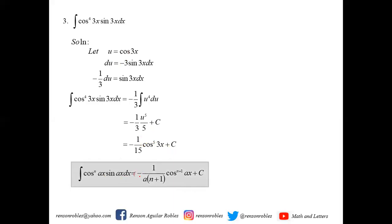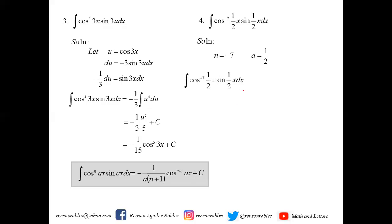We can generalize this as: the integral of cosine to the n of ax times sine ax dx equals negative 1 over [a(n+1)] times cosine to the n+1 of ax plus c — since the derivative of cosine is negative sine. For example, for cosine raised to negative 7 of (1/2)x times sine (1/2)x dx, n equals negative 7 and a equals 1/2. Applying the formula: negative 1 over [(1/2)(negative 6)] equals negative 1 over negative 3, which is positive 1/3. So the answer is 1/3 times cosine raised to negative 6 of (1/2)x plus c.